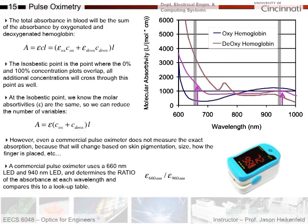We're still left with path length, and we need to deal with skin pigmentation, size, path length, and placement. A commercial pulse oximeter uses two wavelengths — typically 660 nanometers and 940 nanometers. They look at the ratio between the measurements at those two wavelengths, compare it to a lookup table knowing where the spread should be, and from that they can predict the concentration of oxygenated versus deoxygenated blood. That's why two wavelengths are used — it's essentially an exercise in reducing as many variables as possible through multiple wavelength measurements at the right wavelengths.